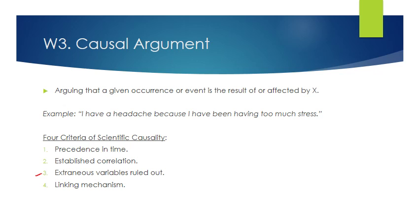The fourth criterion is having a linking mechanism. It's not enough to say a toxin is causing Parkinson's disease — you have to explain how the toxin does it exactly: does it change a neuron, hit the nervous system and cause a chemical reaction? You have to have some kind of physical causal mechanism that allows the cause to take hold of the effect. Without these four things, you have not established causality from a scientific standpoint.